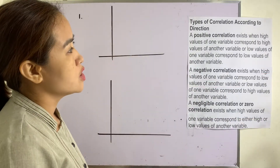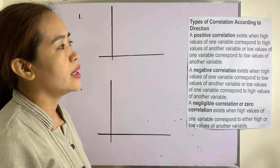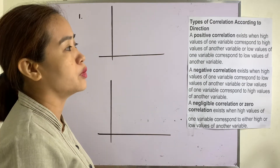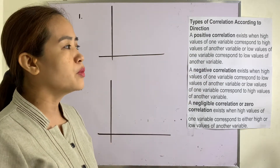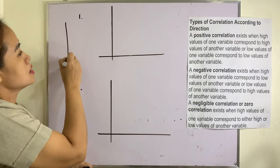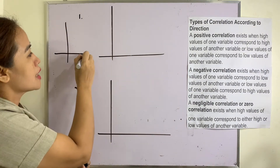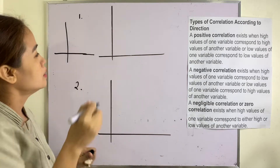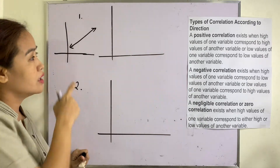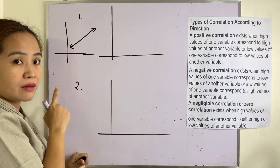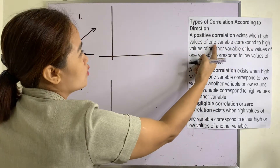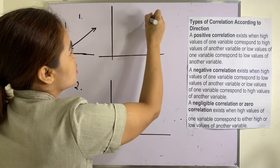Types of correlation according to direction: A positive correlation exists when high values of one variable correspond to high values of another variable, or low values of one variable correspond to low values of another variable. Just like graphing a linear equation — if the slope is positive, it goes upward — the same applies to positive correlation.